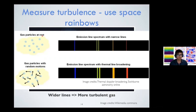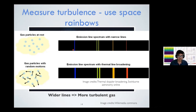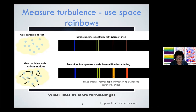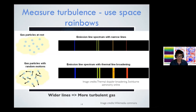Consider a cloud of gas with particles at rest that are not moving. If you look at the emission line spectrum, you see really thin lines. Whereas if these gas particles are moving all around, maybe due to turbulence, then the thickness of these lines is wider — the same lines appear but they are much wider. That's because when gas particles are moving around, these lines become broader. So by measuring the width of these lines, we can tell how fast the gas is moving, and from that we can calculate how turbulent the gas is.